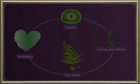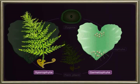Thus, in fern, a sporophyte alternates with a gametophyte. Through the above description, it is clear how reproduction takes place in non-flowering plants like mosses, ferns, cycas and pine.